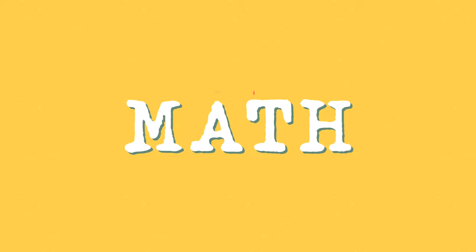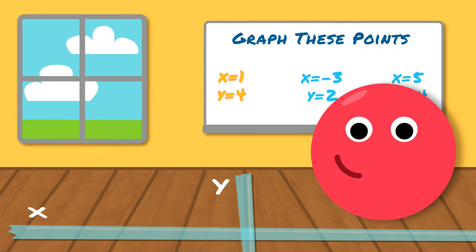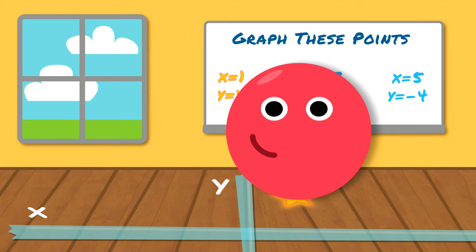Math: how can students act with numbers? Easy — they become the numbers. The next time you assign word problems, let students become the characters and objects they're counting. Are you graphing lines and curves? Tape an x and y axis on your classroom floor and let students represent the points on a graph.